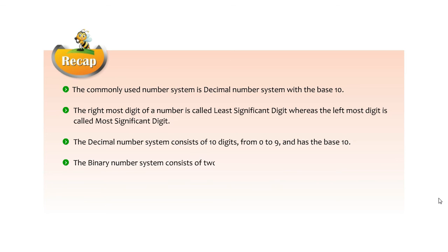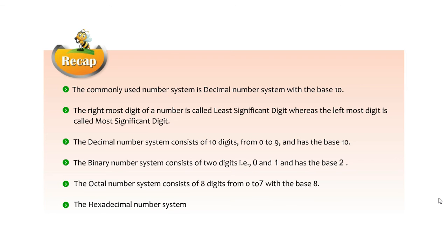The binary number system consists of 2 digits, 0 and 1, and has base 2. The octal number system consists of 8 digits from 0 to 7 with base 8. The hexadecimal number system consists of 16 digits, 10 digits 0 to 9 and 6 letters A to F, and has base 16.